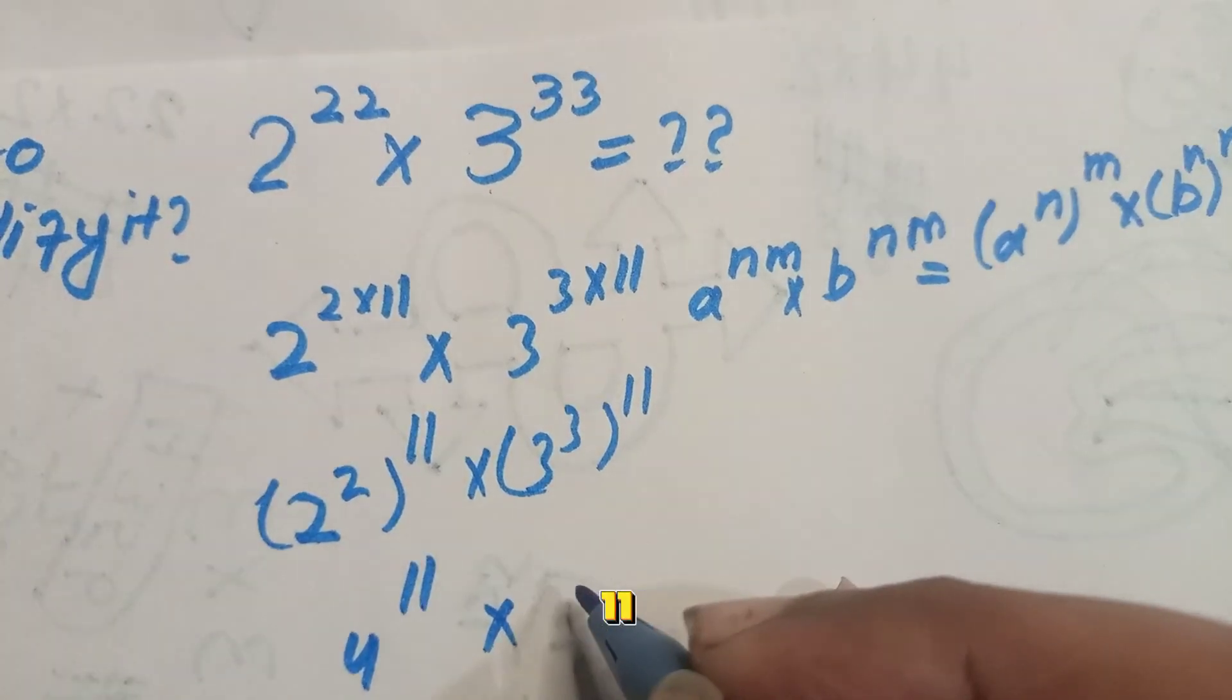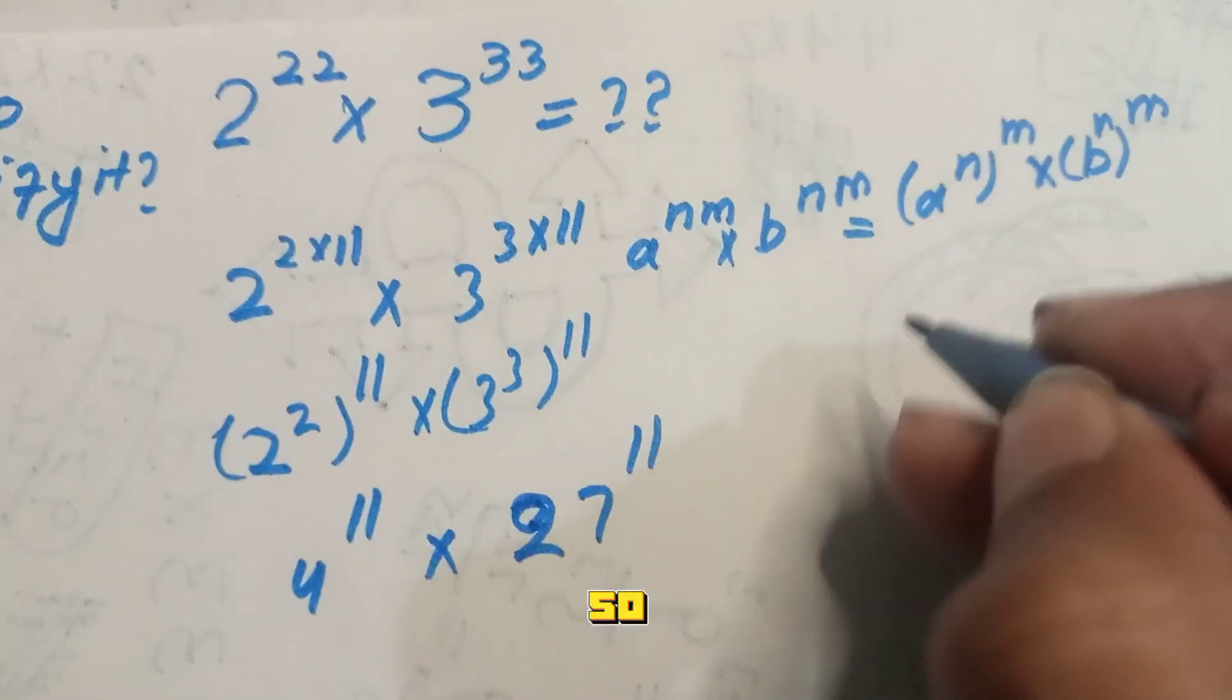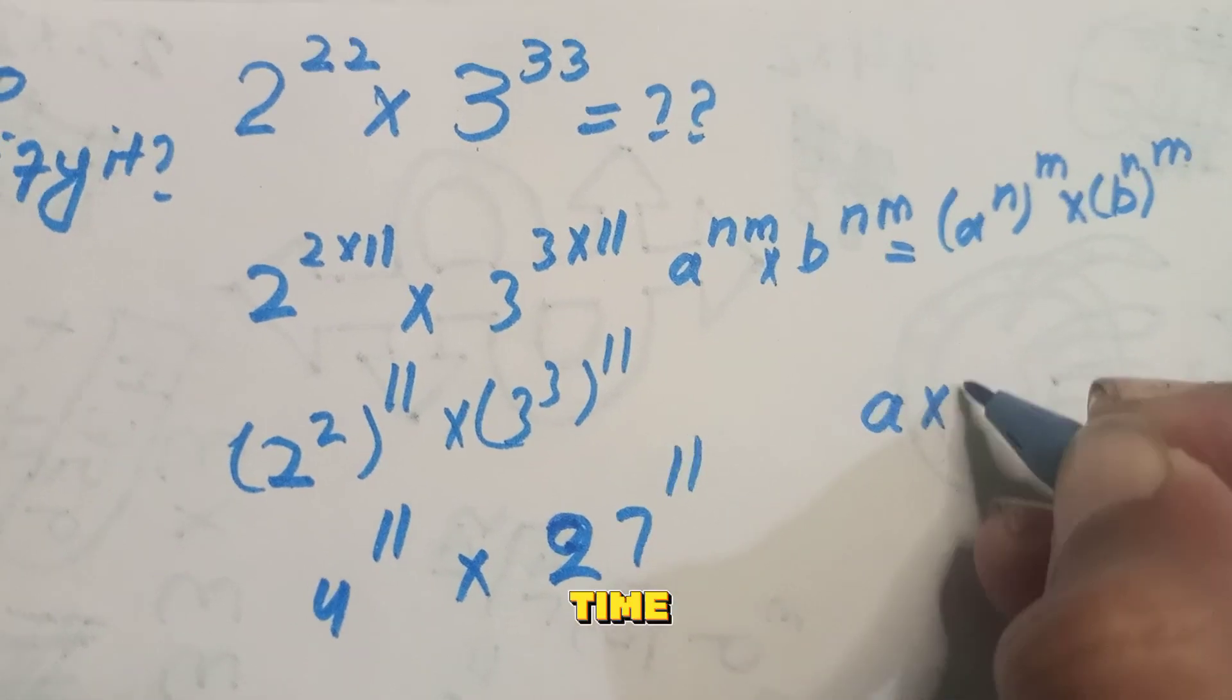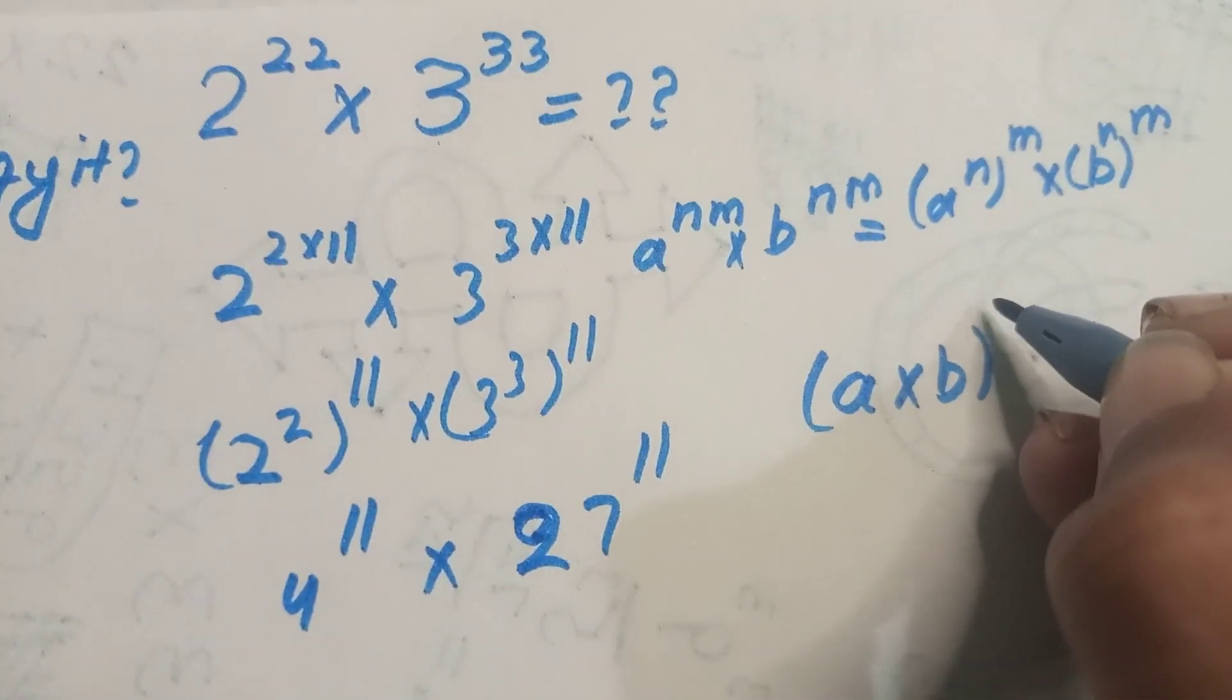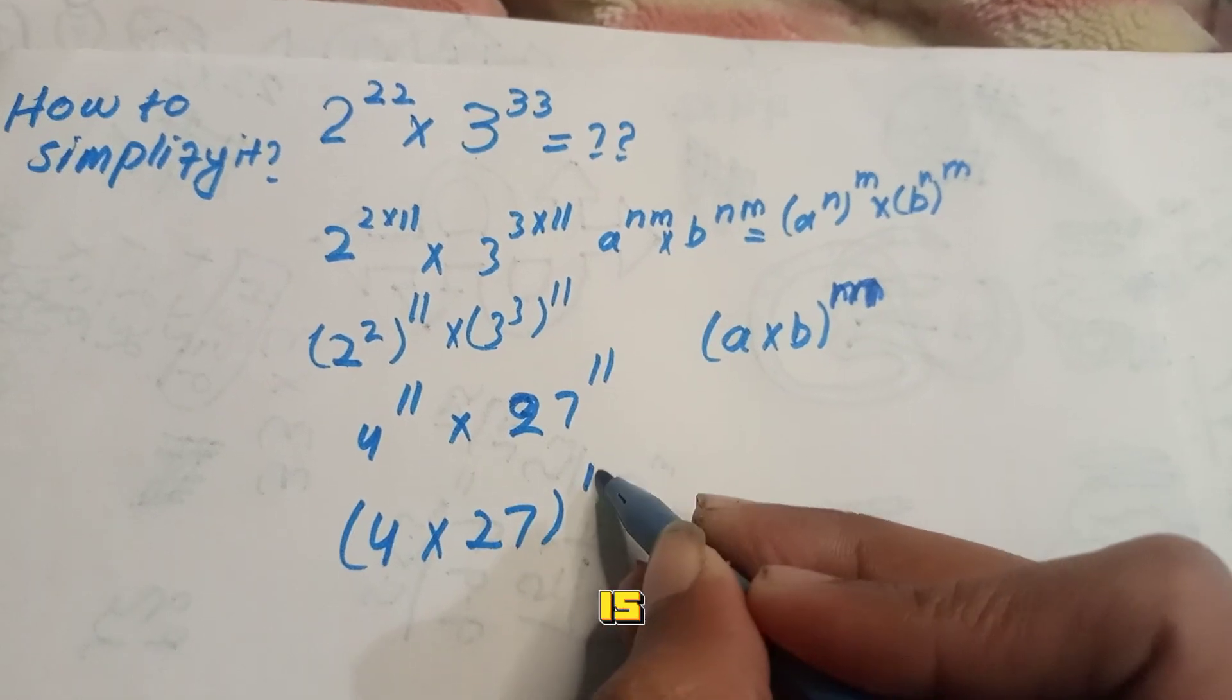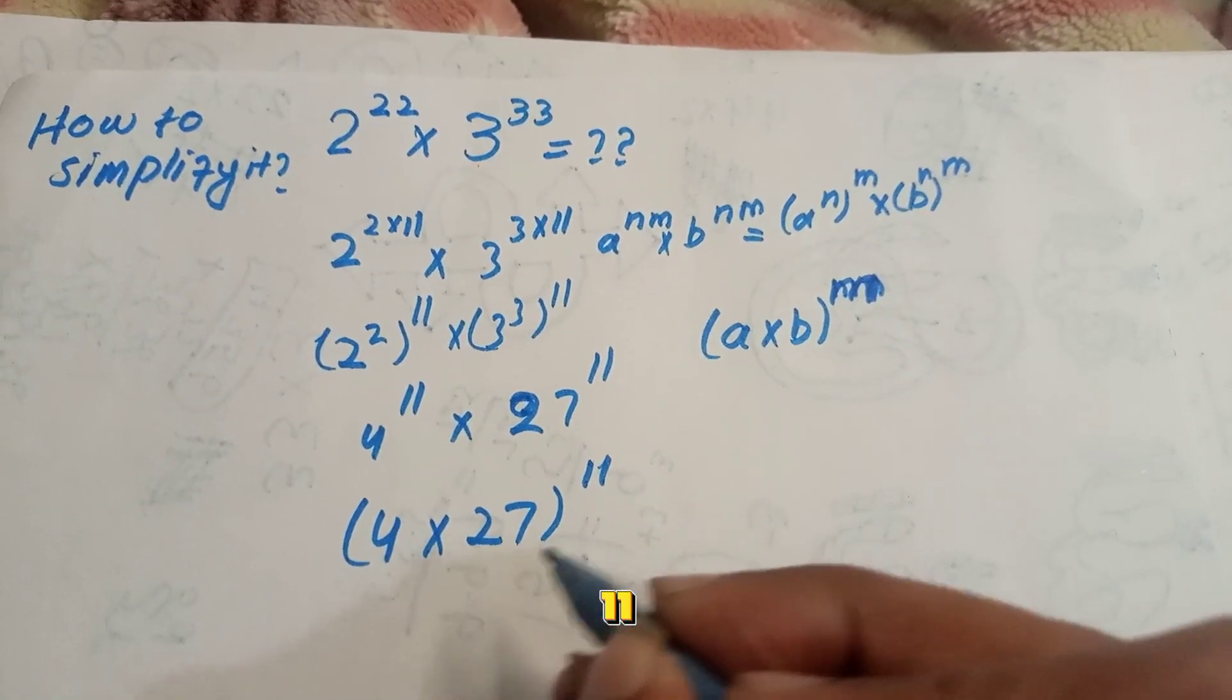There is another exponential equation or formula: a times b whole power m. According to the formula, we can write this equation as 4 times 27 whole power 11.